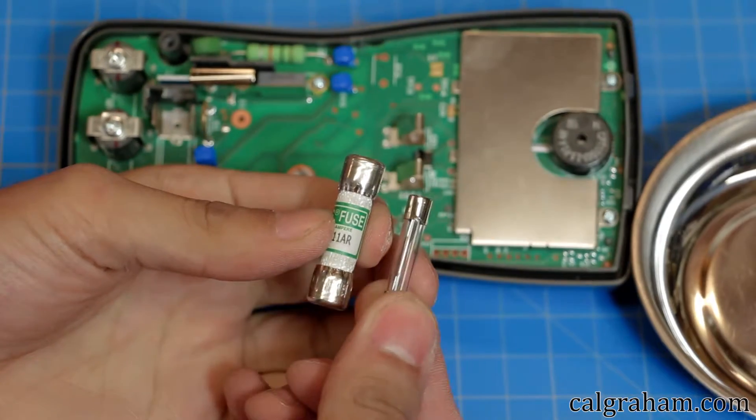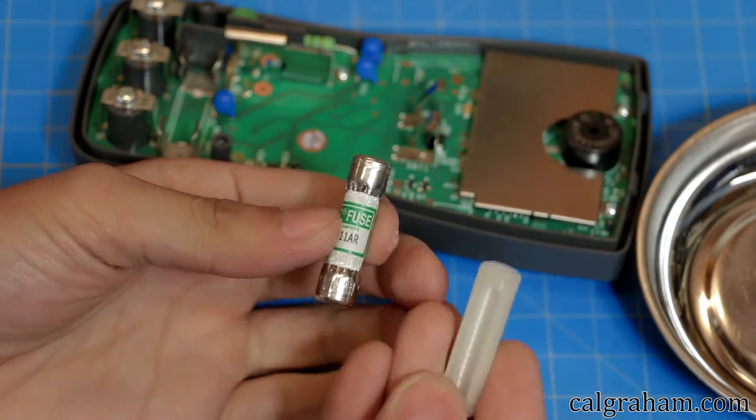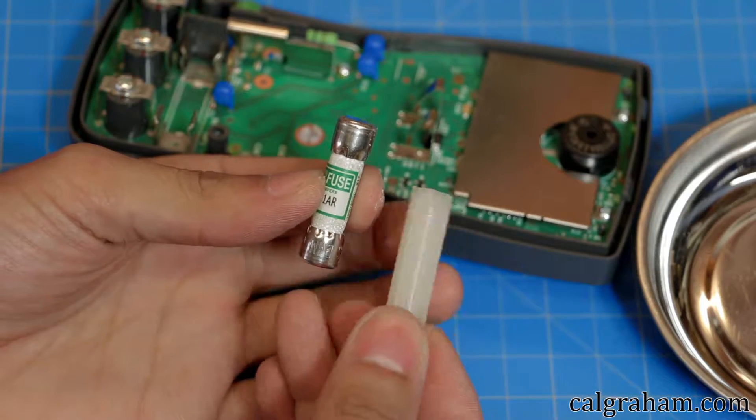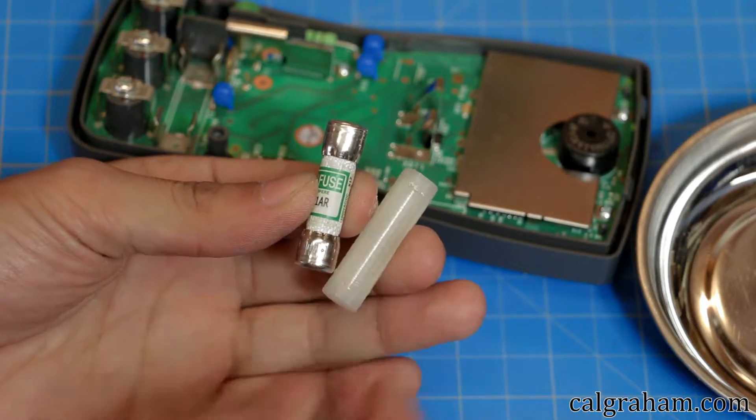Multimeters typically use these large fuses. It's required for the CAT rating. What I'm about to do will render that rating meaningless. Since I never use these for testing high voltage or high current devices, this should be fine for now.